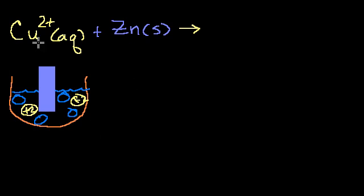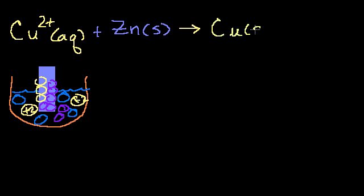What this reaction says is that these copper ions, if they can get a hold of some electrons and essentially become neutral, they would rather go back into the solid state. And the zinc molecules in the solid state, if they can lose some electrons, they want to jump into the solution. So copper will go into the solid state, and zinc 2+ will go into the aqueous solution.